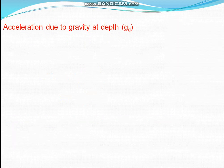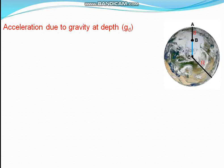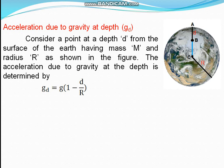Acceleration due to gravity at depth — denoted by g-d. If you see the figure, A, B, and C are three points: A at the surface, B below the surface, and C at the center of the earth. R is the radius of the earth. The formula for calculating acceleration due to gravity at depth is what we learn in class 11 if we join the science stream.